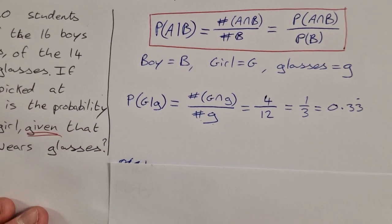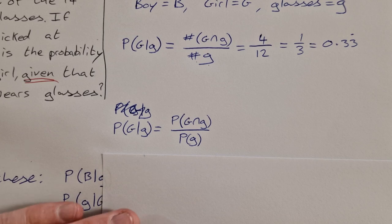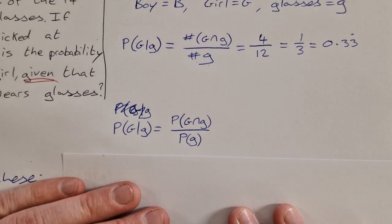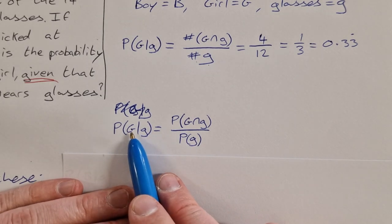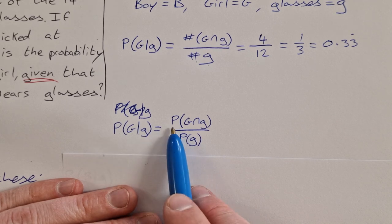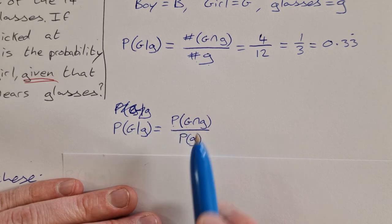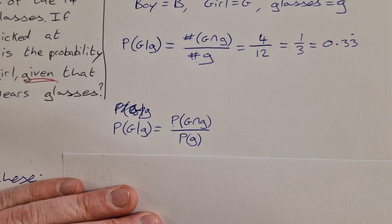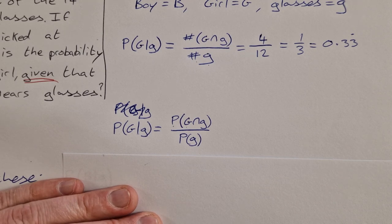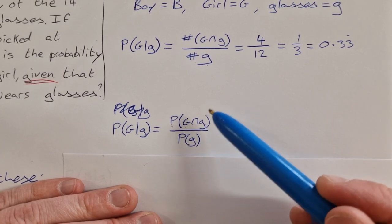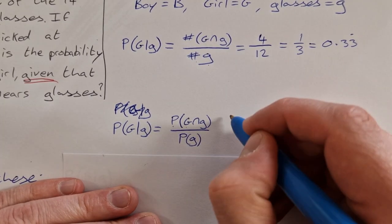We're just going to do it the other way now, just to show that you'll get the same answer. So the probability of girl given glasses is equal to the probability of girl intersection glasses. So the probability of girl intersection glasses is the probability of getting a girl who wears glasses out of the total group.